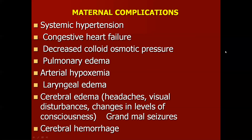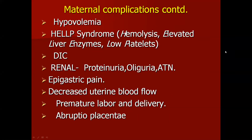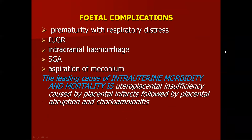Maternal complications include systemic hypertension, congestive heart failure, pulmonary edema due to decreased colloid osmotic pressure, arterial hypoxemia, laryngeal edema, cerebral edema, cerebral hemorrhage, hypovolemia, HELLP syndrome, DIC, epigastric pain, premature labor, and placental abruption. Fetal complications include prematurity, growth retardation, small-for-gestational-age babies, and meconium aspiration. The leading cause of intrauterine morbidity and mortality is uteroplacental insufficiency caused by placental infarcts, followed by placental abruption and chorionitis.